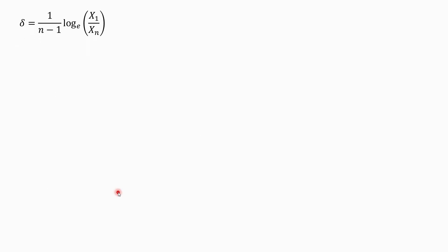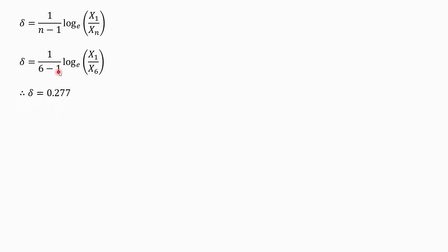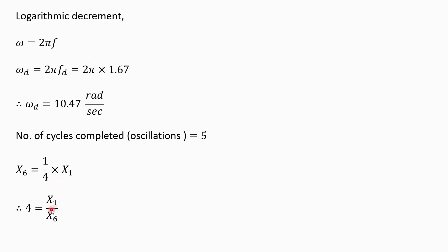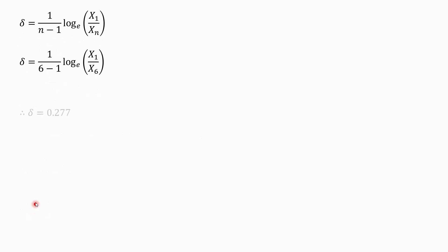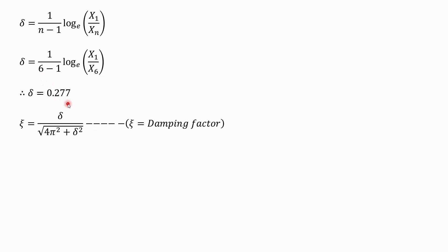Using this, we can calculate the logarithmic decrement. The value of n is 6. Substituting the values: it is 1 upon 5 multiplied by ln of x1 upon x6, which is ln(4). We have already seen that x1 upon x6 equals 4 and n equals 6. So the value of delta, the logarithmic decrement, is 0.277.